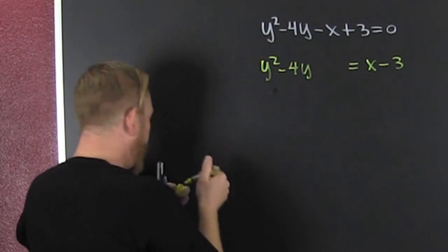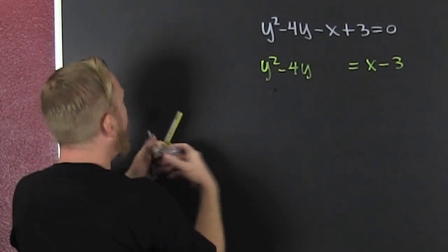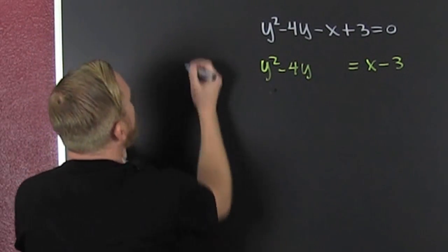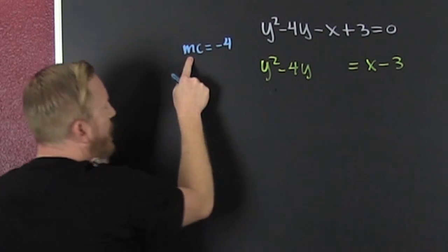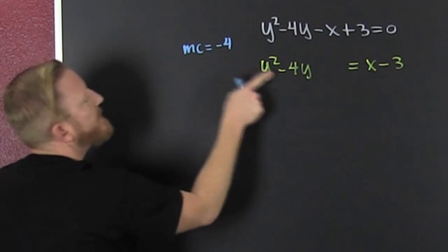What do I need? I need to complete that square. The no-nonsense, no thinking approach to completing the square. This is the middle coefficient, it's minus 4.